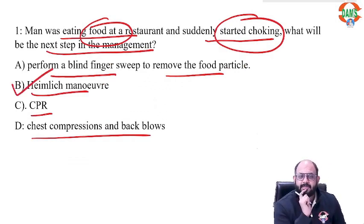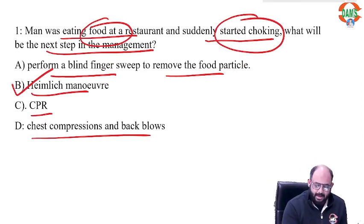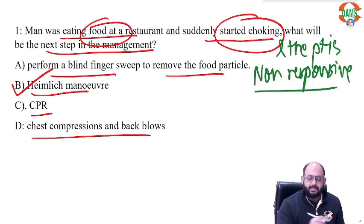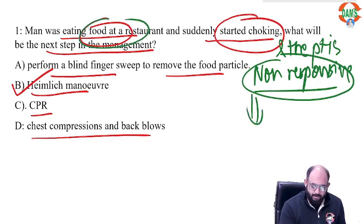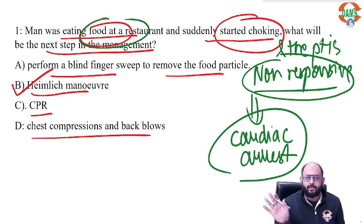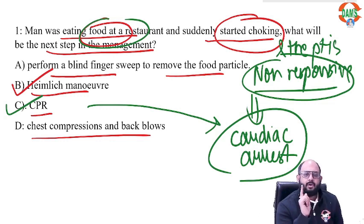Why are we discussing this question? Because next time they ask you this, they will simply add the words 'the patient is non-responsive.' If the patient is non-responsive after a foreign body obstruction, it points towards cardiac arrest. And whenever there is cardiac arrest, you don't care about the foreign body — you perform CPR. Remember, this one small change in the wording of the question will change the answer entirely.